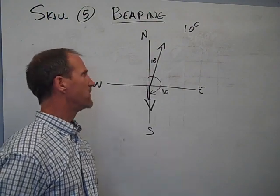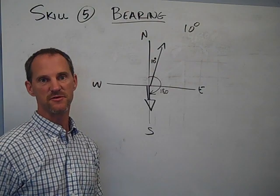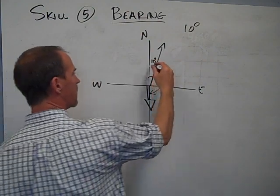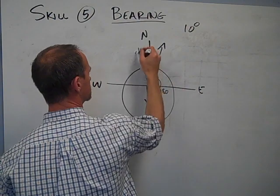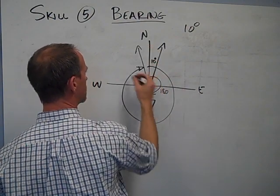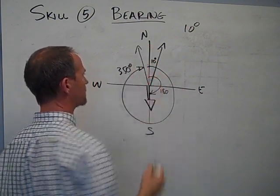Where would a bearing of 350 degrees be? It would be all the way around to be the mirror image of my first 10 degrees. That would be 350 degrees is my bearing.